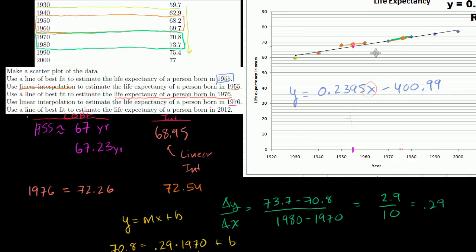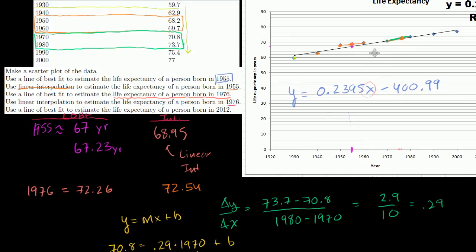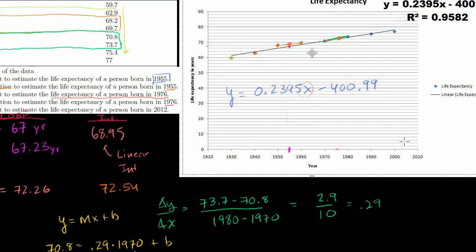Now, let's do this last part. Use the line of best fit to estimate the life expectancy of a person born in 2012. And this is what's cool about the line of best fit. We don't have 2012 here. 2012 goes off the table, but we could just keep continuing on with this line right here and see what is this line equal when the year is equal to 2012.